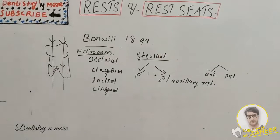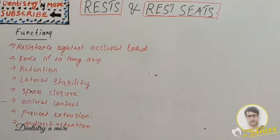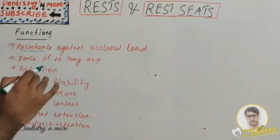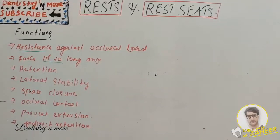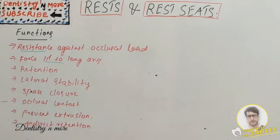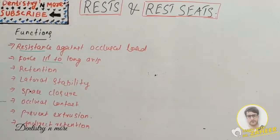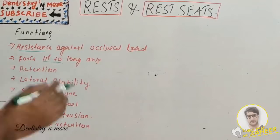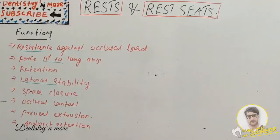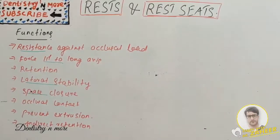The basic functions of rest include: providing resistance against occlusal load; directing forces of mastication parallel to the long axis of the abutment tooth; maintaining the retentive terminal of the clasp arm in its intended position; preventing the denture base from settling past its intended position; and providing lateral stability against undue horizontal stress to the soft tissue of the ridges.